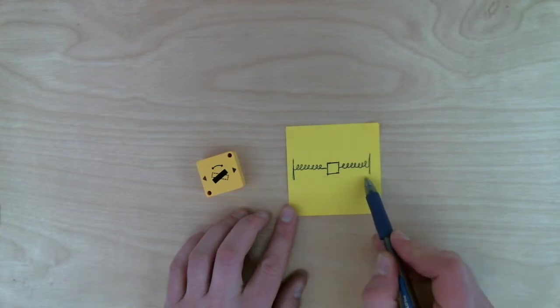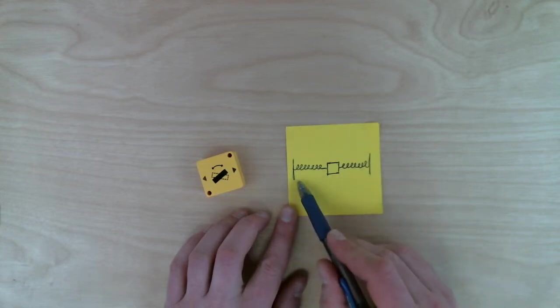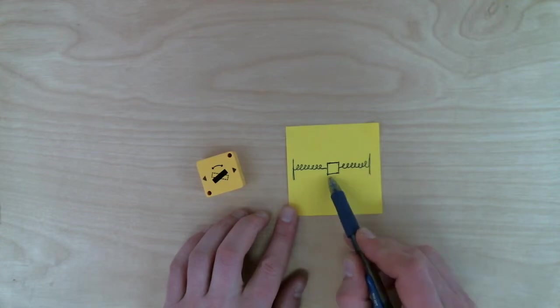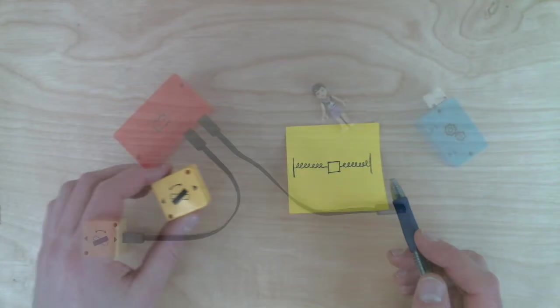As you tilt it back and forth, the weight falls closer to one side or the other, and it can electrically sense how close the weight is to the sides. The same thing happens when you shake it back and forth.